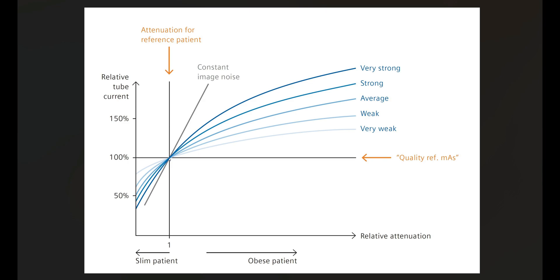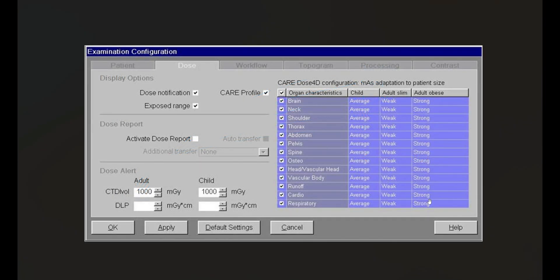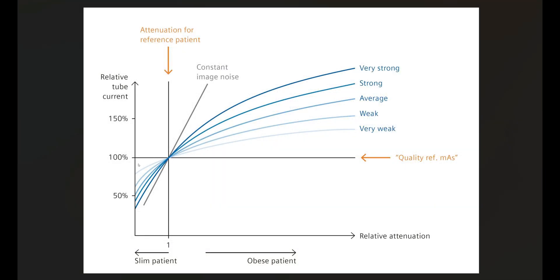This works in inverse for slim patients, and this is where people often get into trouble — setting the strength to very strong across the board. If you do that, it creates image quality problems for smaller patients, because the very strong setting will aggressively modulate the dose down as patients get smaller, resulting in much lower radiation doses but also poor image quality. For this reason, most sites stick to 'average' for obese, average, and slim patients.